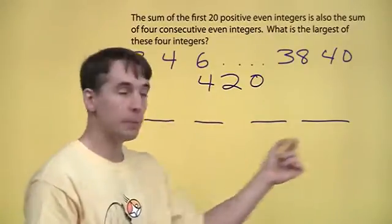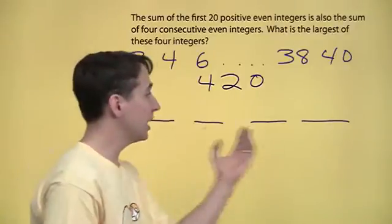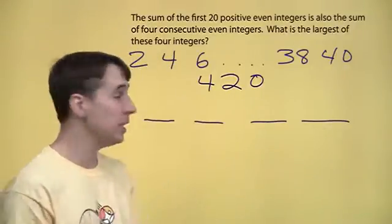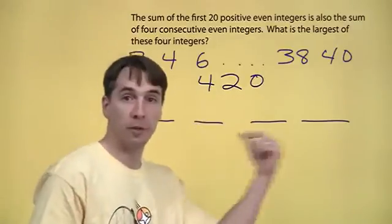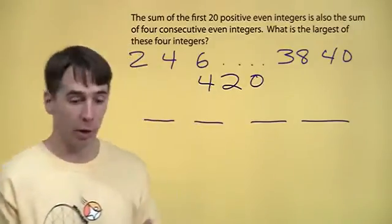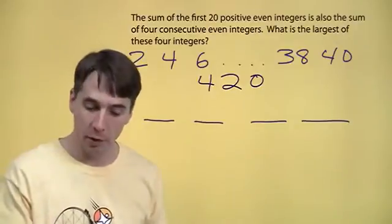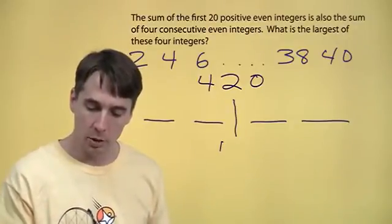I've got four numbers. They add up to 420. They're evenly spaced out. So that means their mean is right in the middle. The mean is just the sum divided by how many numbers there are. There's four of them. 420 divided by four. That means the middle is 105.